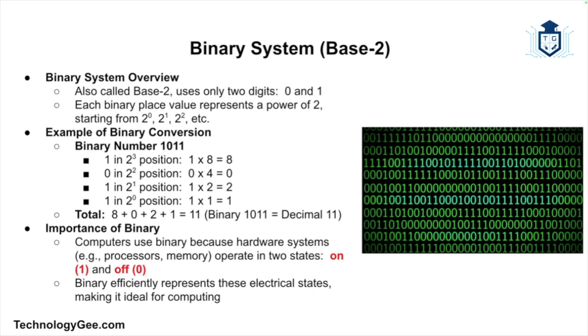Why is binary important? Computers use binary because digital circuits such as processors and memory only understand two states: on and off. These states can be represented perfectly by ones and zeros in binary notation.